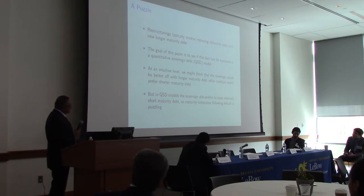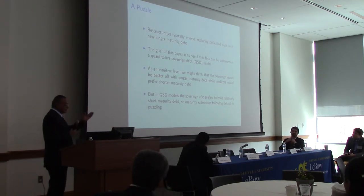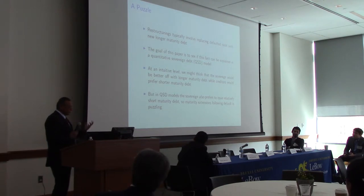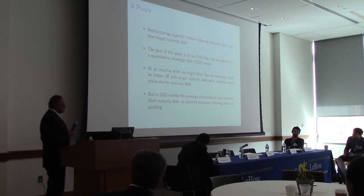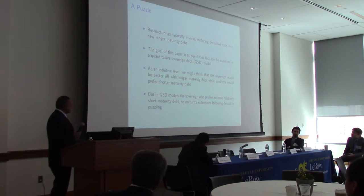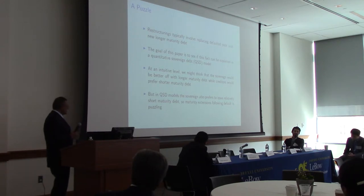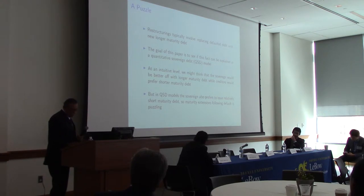The sovereign understands this and therefore wants to issue very short-term debt to reduce borrowing costs. So you get a model where both creditors and debtors want short-term debt — but that's not what we see. Governments issue long-term debt. And in restructuring, as Juan pointed out, there is no more existing debt, so the logic of dilution points you toward short-term debt. But you see the opposite — restructuring leads to maturity extension.